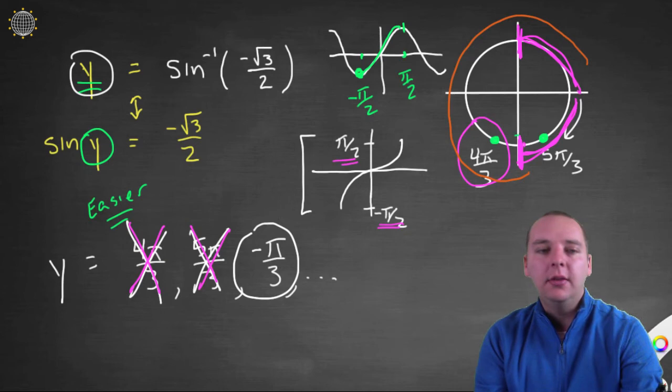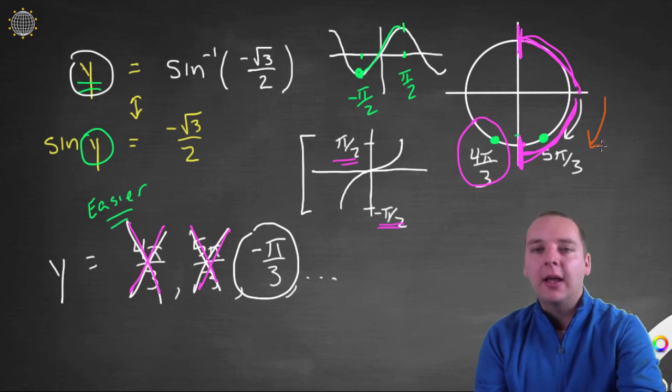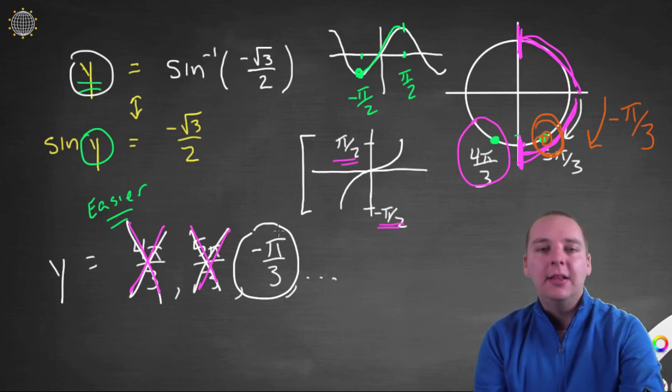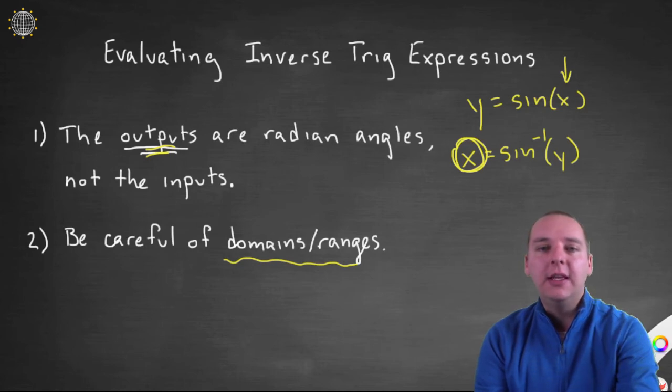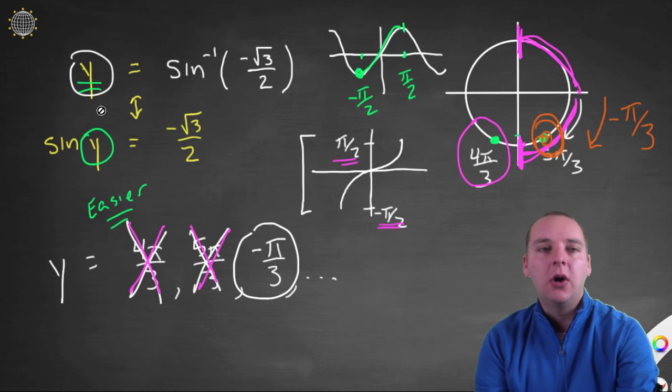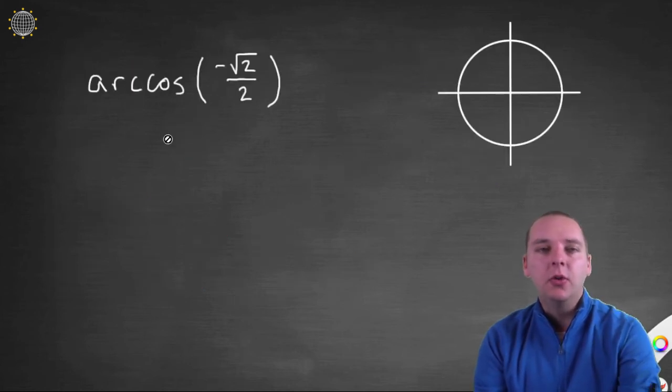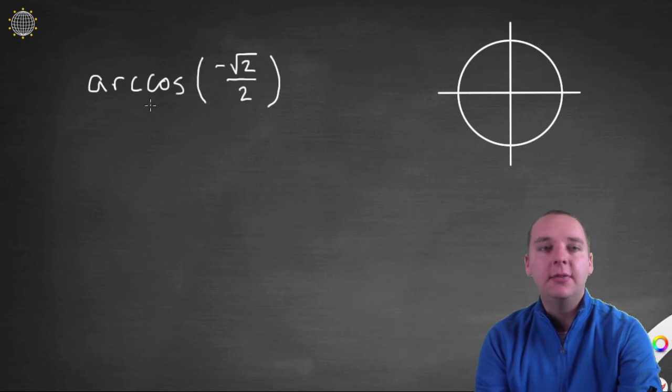So this would be the one and only correct answer to sine inverse of negative root three over two. This would be equal to negative pi over three and nothing else. Now if you remember what I said earlier, your outputs are radian angles, not your inputs. And sure enough, that's exactly what we saw. Our output of sine inverse negative root three over two was a radian angle. So that's hopefully pretty clear to you. Okay. Let's go a little quicker now.